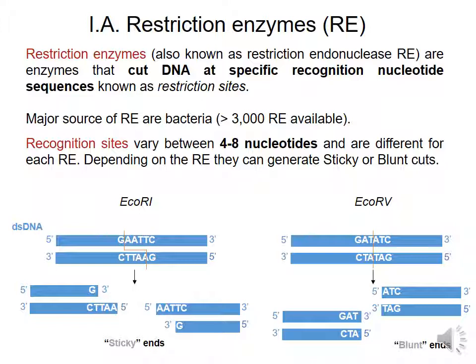The major source of these restriction enzymes are bacteria. There are more than 3,000 available restriction enzymes on the market, giving you a large variety of restriction enzymes to use in your cloning experiments.